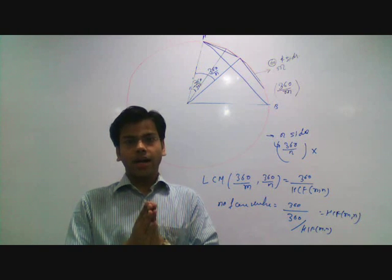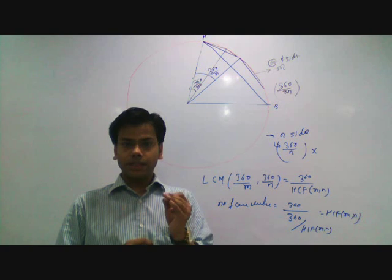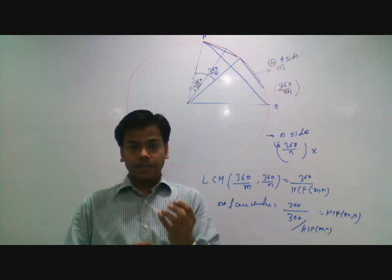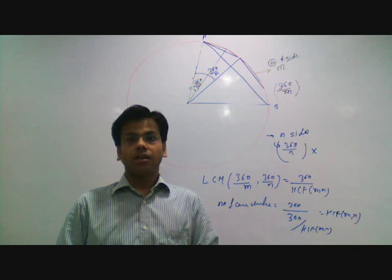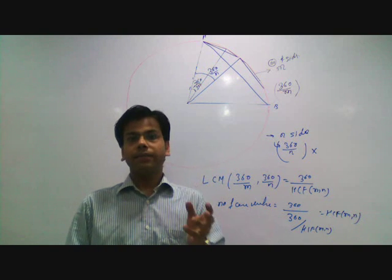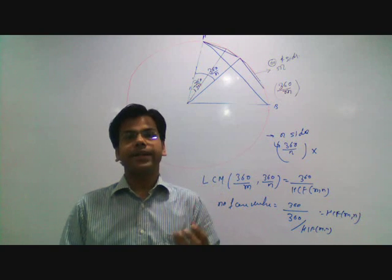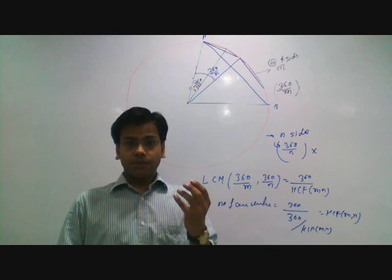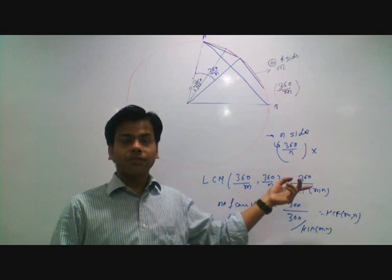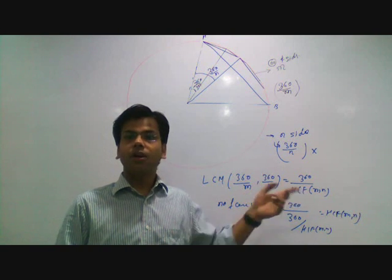If we have two polygons inscribed within a circle, the common vertices they share is nothing but the HCF of the given number of vertices or sides. We find the central angles, take their LCM because at the LCM they will give a common vertex. The central angle of the new regular polygon formed by common vertices is 360 upon HCF of m and n. So the number of common vertices is 360 divided by that central angle — the 360 cancels out — leaving only the HCF of m and n.